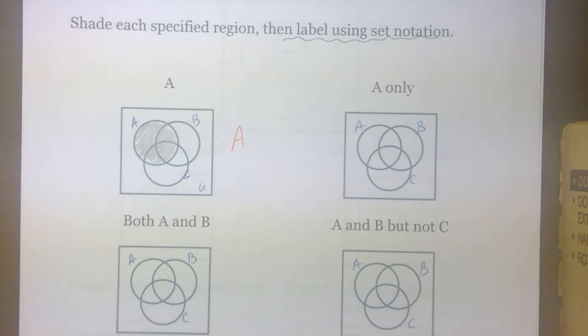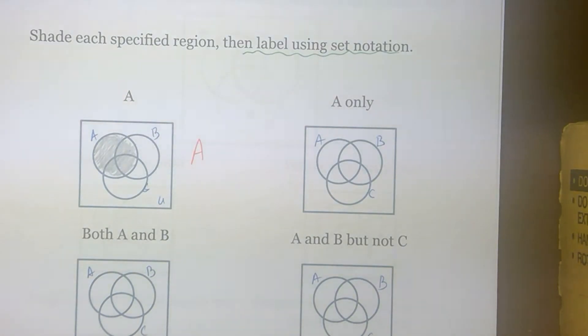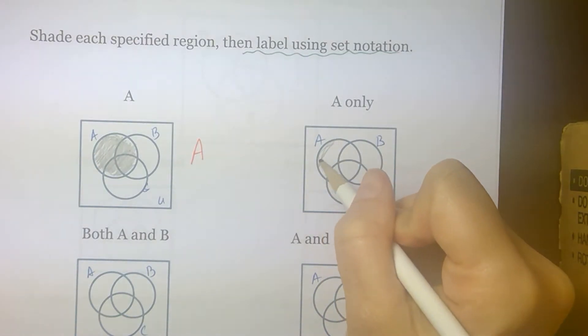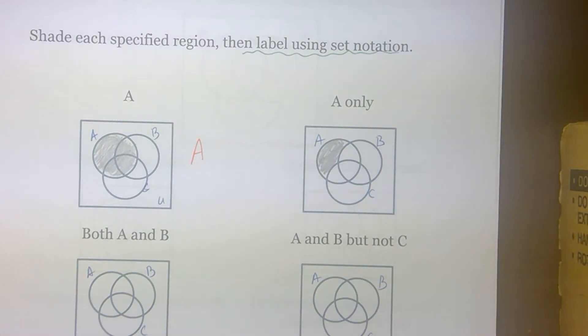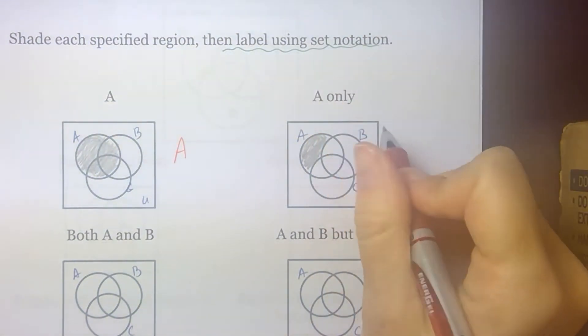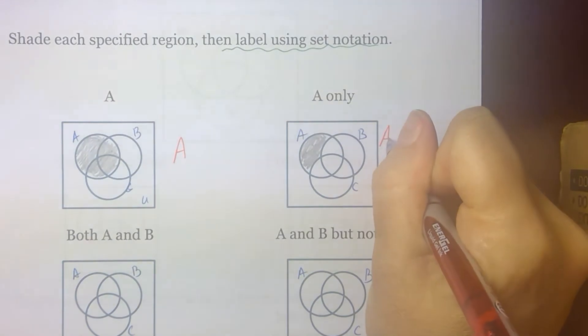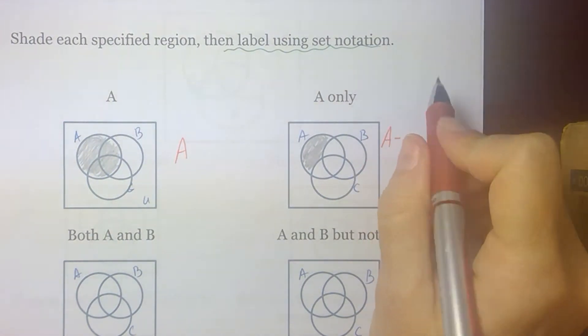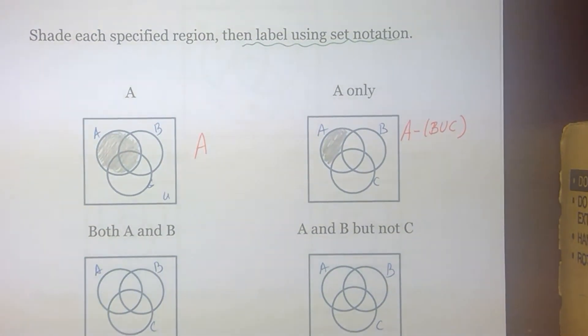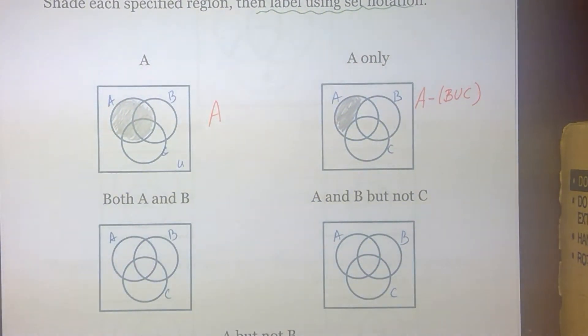In words, however, in the next one, if I'm asked for A only, well, A only implies I don't want anything that's included in B or C. So A only is this just A, region 1. And in set notation, I want to think about starting with A and subtracting anything that is B or C from A.